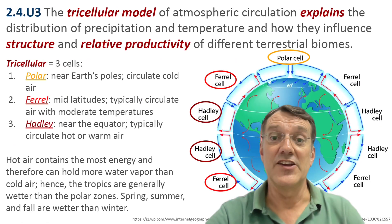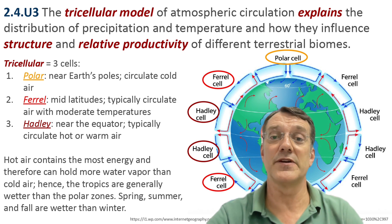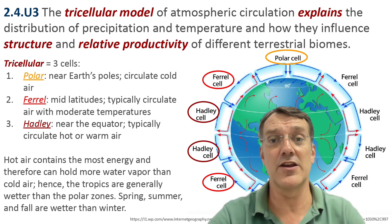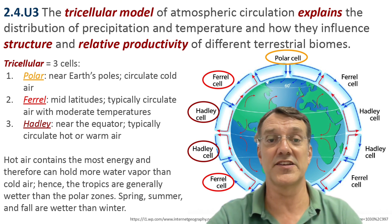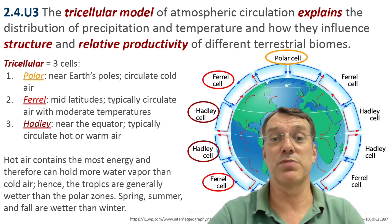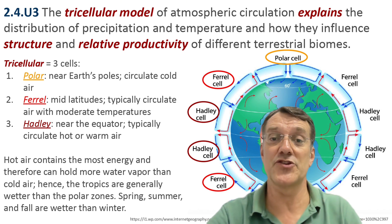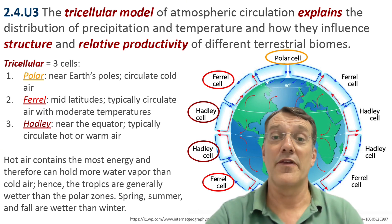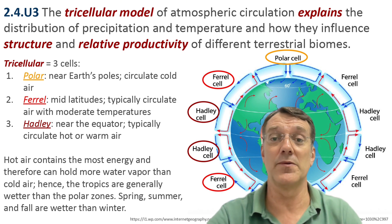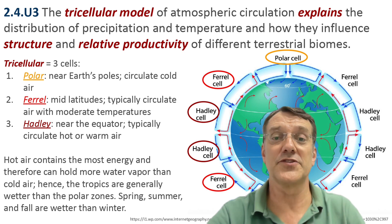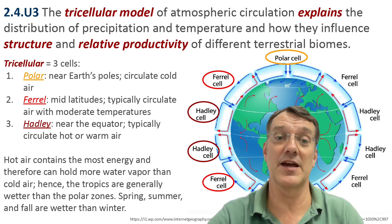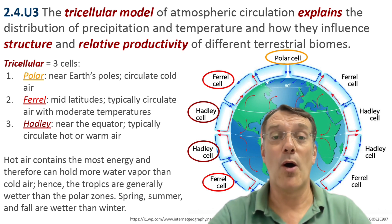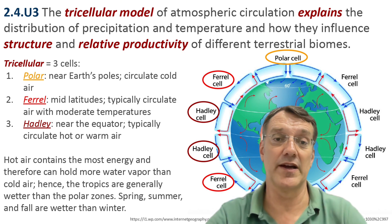The tricellular model of atmospheric circulation is something you should definitely know for your ESS exam. It explains the distribution of precipitation and temperature globally. There are three cells in each hemisphere: the Hadley cells near the equator circulate warm air, the Ferrel cells in the mid-latitudes circulate moderate temperature air, and the polar cells circulate cold air.